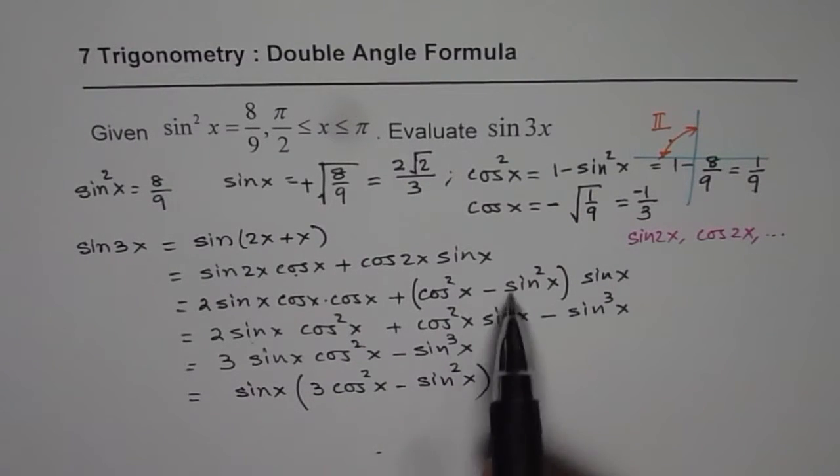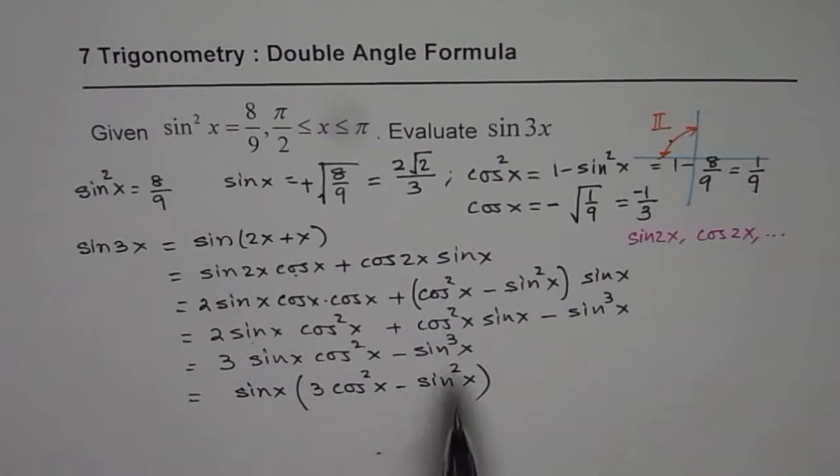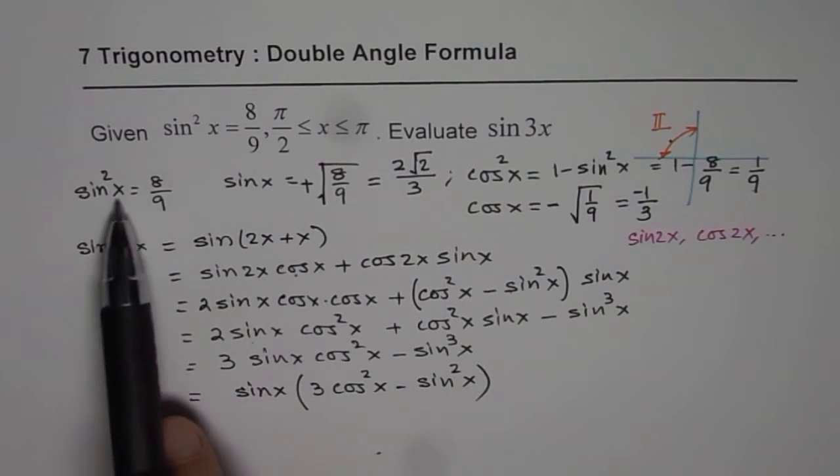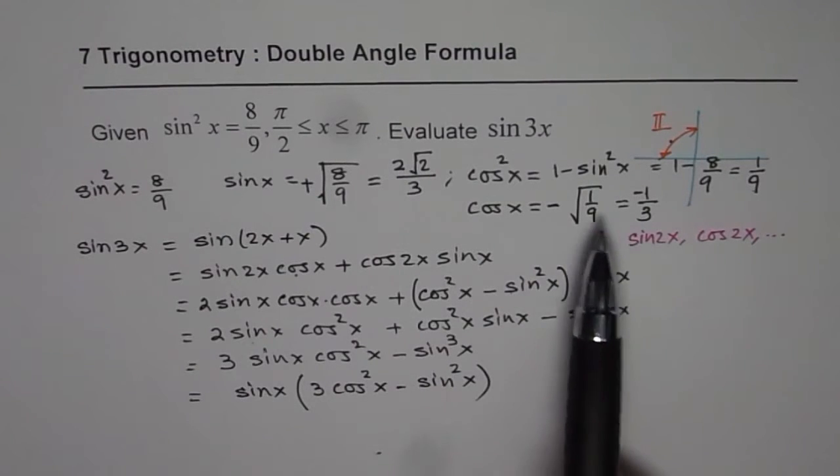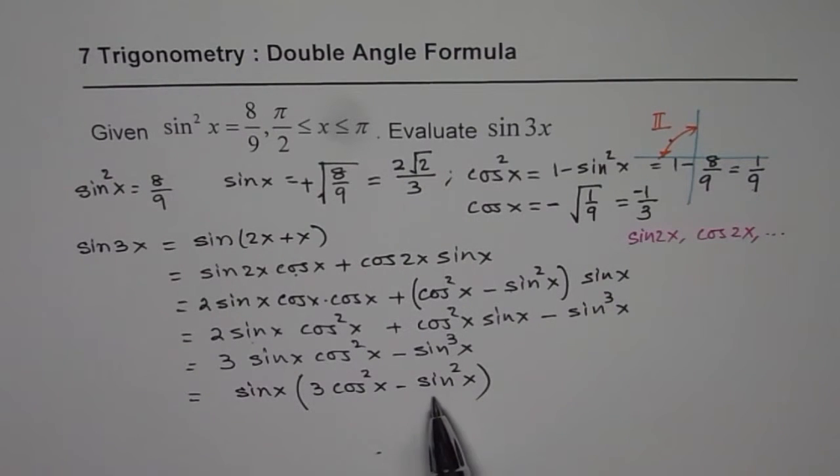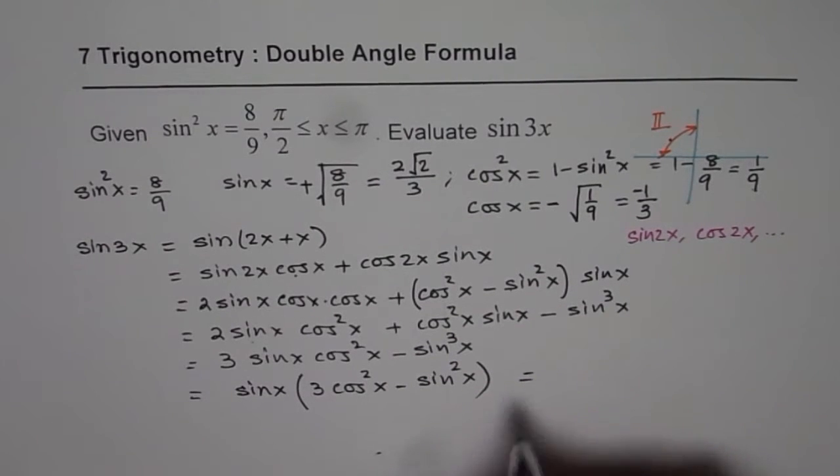Anyway, we could have got it from here also. So what I am trying to say here is, we know what is sin²x, we know what is cos²x, we know what is sin x. So we can substitute these values and simplify.